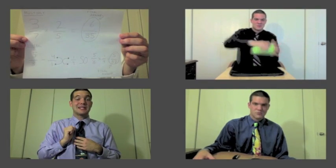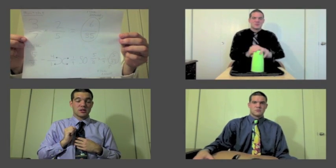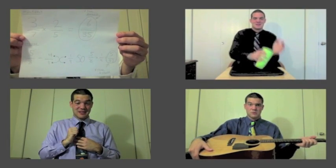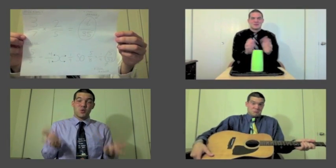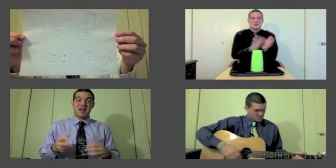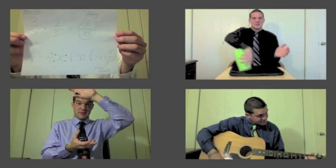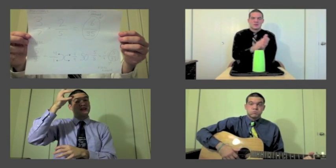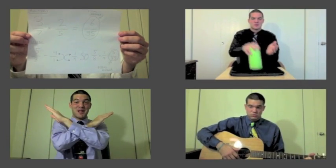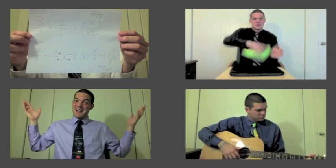Listen to this last part: to multiply, you stay in line. But when you divide, you have to flip the second fraction — then you can multiply just fine.